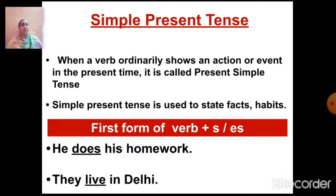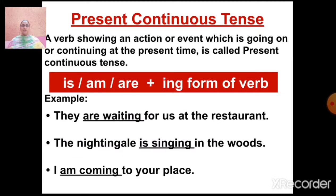In case of plural subject, like 'they', 'we', etc., we do not use S or ES. Now let's quickly revise present continuous tense. A verb showing an action or event which is going on or continuing at the present time is called present continuous tense. The formula for present continuous tense is: is or am or are plus the ING form of verb. 'Is' is always used with singular subject like he, she, or any other singular subject.